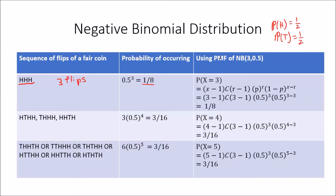We can also verify this using the PMF of the negative binomial with success probability P equals 0.5 and number of required successes R equals 3. Plugging in X equals 3: (X−1 choose R−1) becomes (2 choose 2), which is 1, times 0.5 to the power of 3. That gives one eighth again, so the two approaches correspond and confirm we are correct.